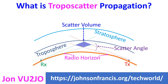When the transmitting and receiving stations point their antennas to a common scatter volume in the troposphere, as shown in the illustration, the troposphere refracts the signal towards the receiving station.